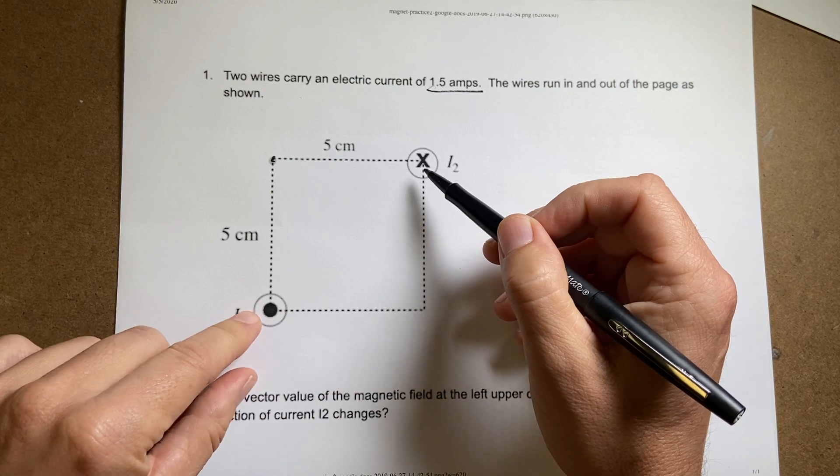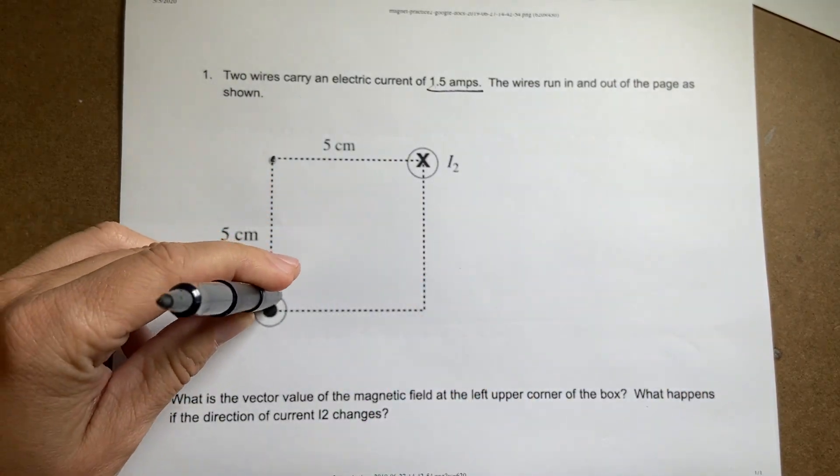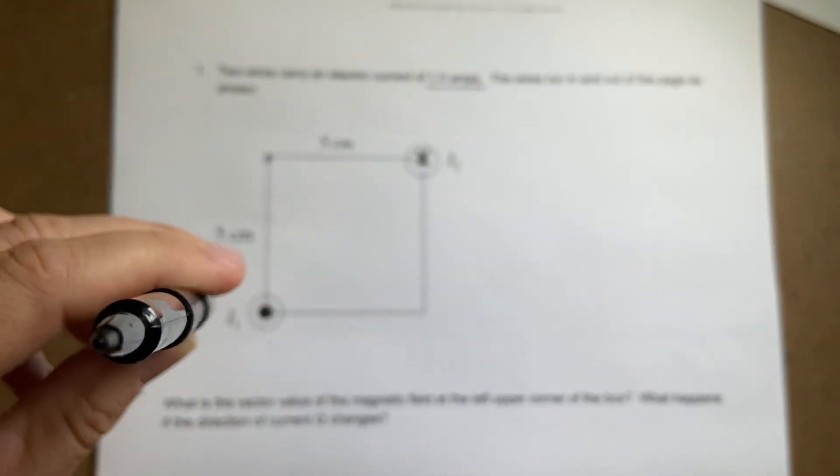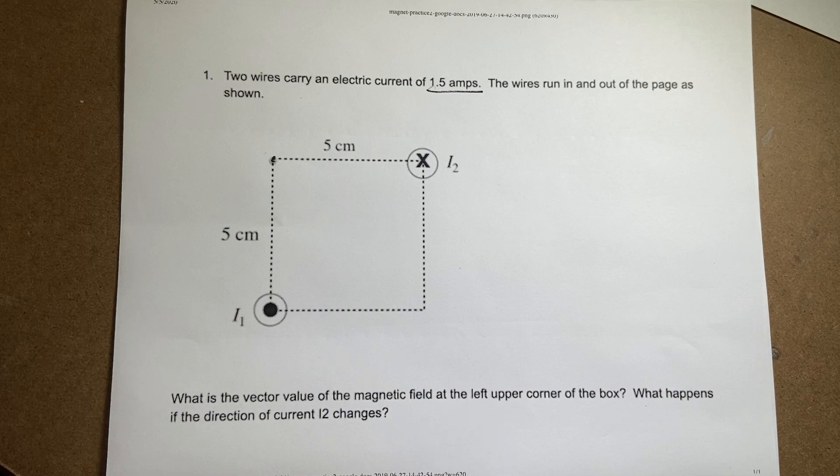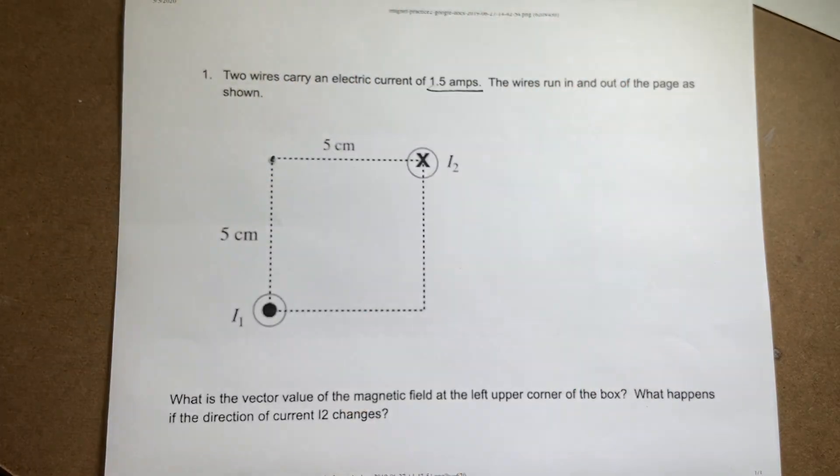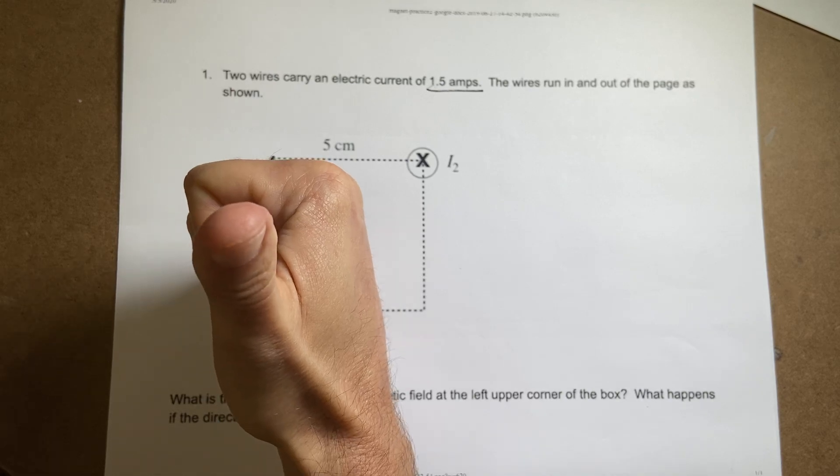So let's think about the right-hand rule. So this one, if I have a current coming out of the paper like this, right there, that's coming right towards you. Okay, see? So if I take my right hand and I put my thumb in the direction of the electric current, my fingers show the direction of the magnetic field.